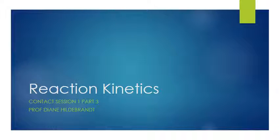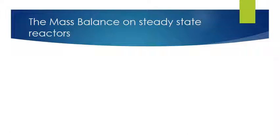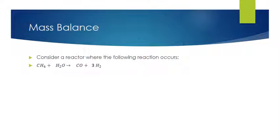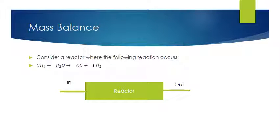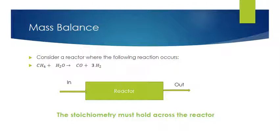Contact session 1, part 3 of Reaction Kinetics. Let us look at the mass balance on steady state reactors. Consider a reactor where we have steam methane reforming occurring — methane plus steam reacting to CO and hydrogen as shown. Think of it as a block where you have a stream coming in and a stream coming out, and the reactor is where the chemical transformations occur. The stoichiometry we've been studying earlier must hold across the reactor.